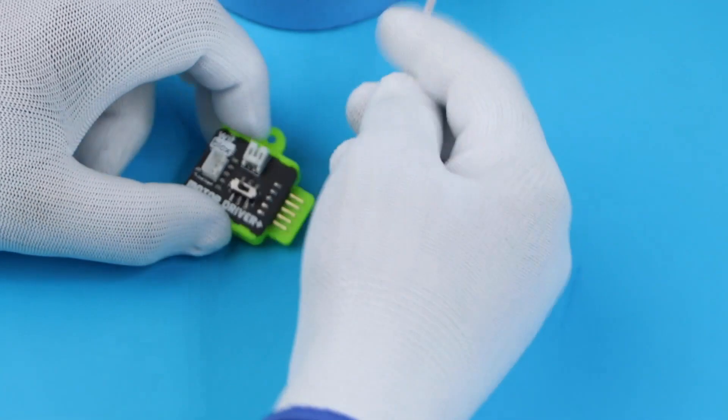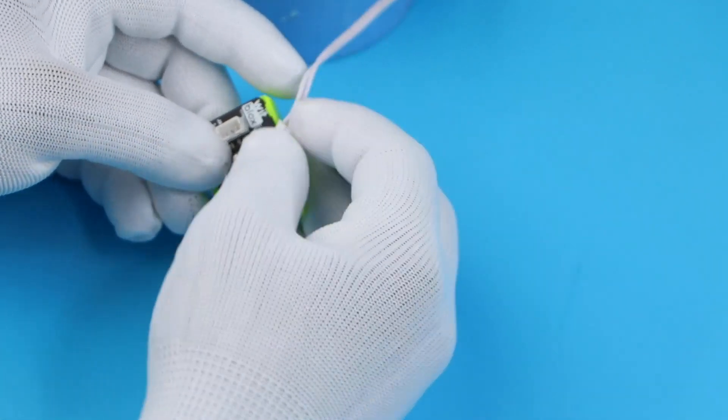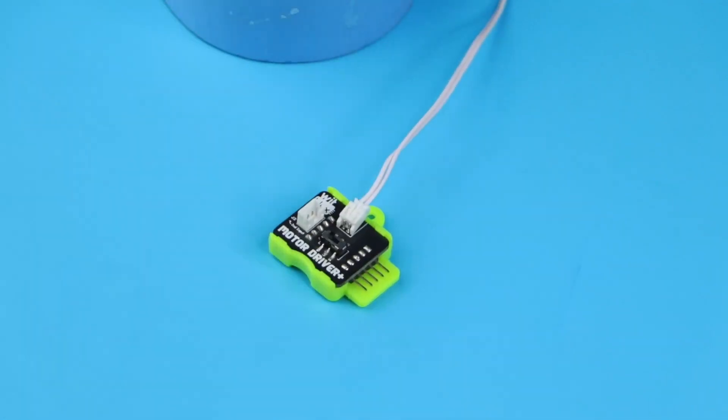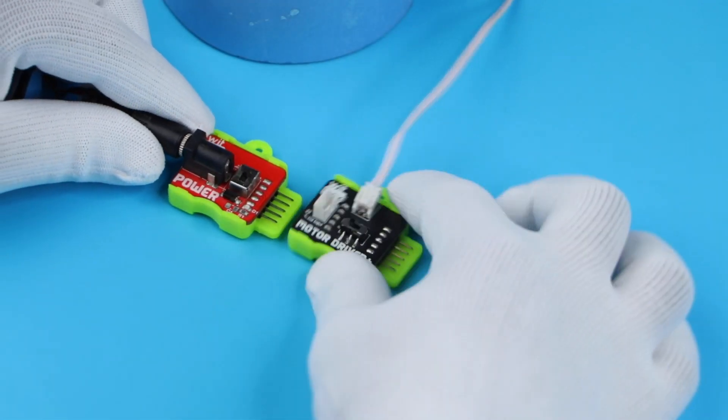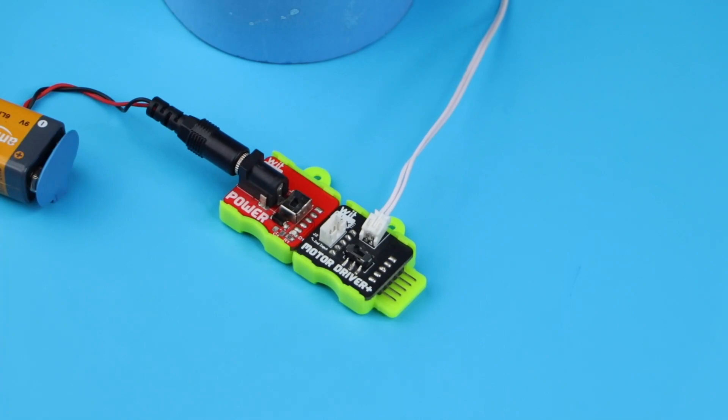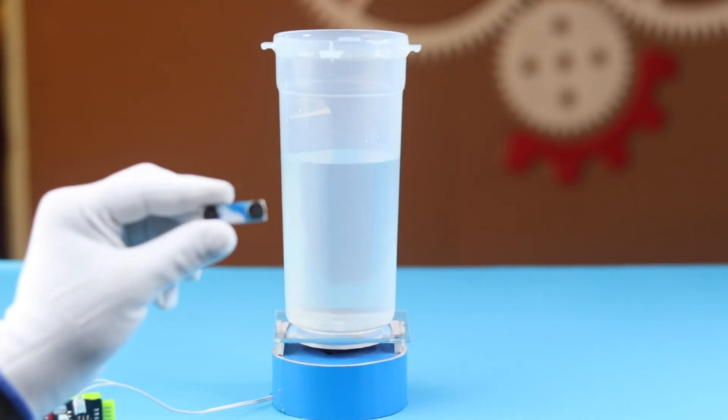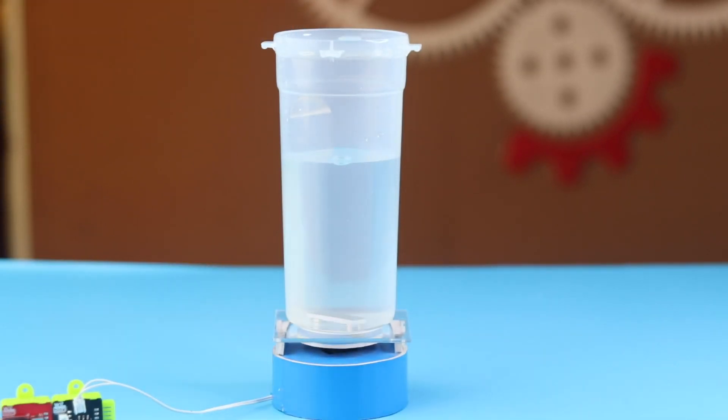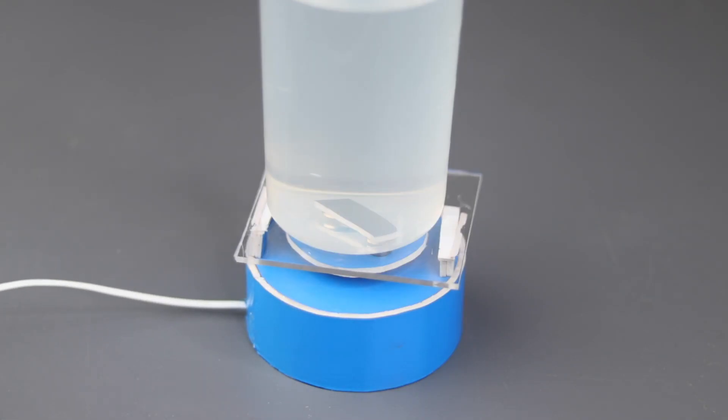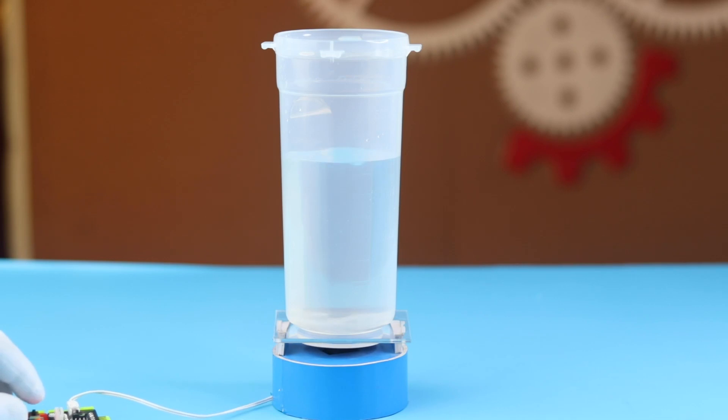Let's connect the blocks. First connect the motor to the motor driver blocks, and then connect the power blocks. Now take a bottle half filled with water and put this piece inside the bottle. Make sure that the magnets are facing each other. And done.